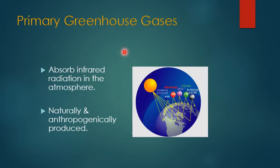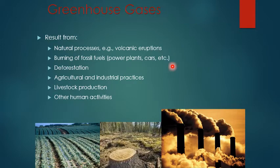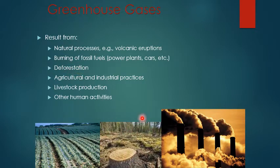Primary greenhouse gases are absorbed into the atmosphere — they are both naturally and anthropogenically (meaning human) produced. The main ones are carbon dioxide and methane, but there are others like ozone. They come naturally from things like volcanic eruptions, but they're also being produced at a much more alarming rate because of humans: burning fossil fuels, power plants, using cars, deforestation, slash-and-burn practices, agriculture and industrial practices, livestock production, and other human activities are leading to a huge increase in greenhouse gases.